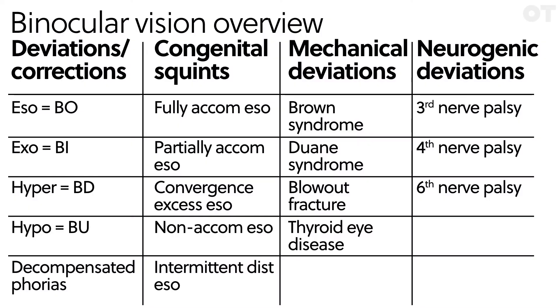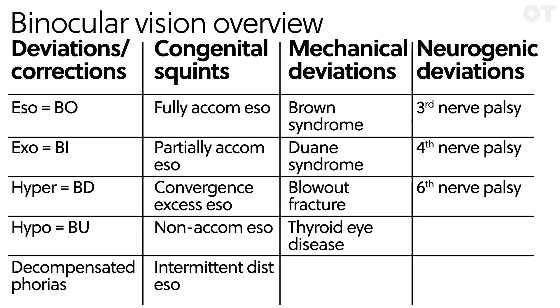Moving on to congenital squints — fully and partially accommodative esotropia. These occur because of too much accommodation, so we find the full refractive power, generally a lot of plus, dispense that, and the fully accommodative ESOs relax to become esophoric or orthophoric. With partial accommodative esotropia, there's still a little ESO left even after the full refractive correction. Convergence excess esotropia happens mainly at near but can be relaxed with bifocal therapy. Then there are non-accommodative types and intermittent distance exotropia — exotropia is rare in children compared to esotropia.